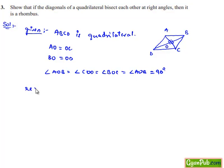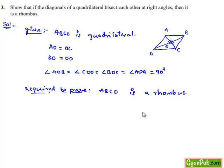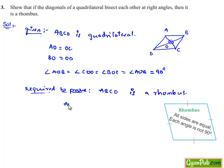Here, what we require to prove is that ABCD is a rhombus. We know the property of a rhombus: the diagonals bisect each other perpendicularly and all sides are equal. Since the condition that diagonals bisect each other perpendicularly is already given, we need to prove that all sides are equal, that is AB = BC = CD = DA.